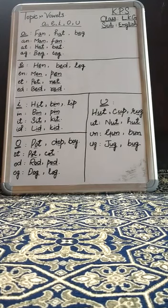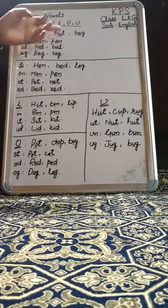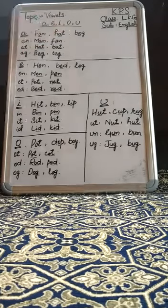First vowel is A. The sound of vowel A is 'A'. Let's see some words having the vowel A: Fan, Hat, Bag.